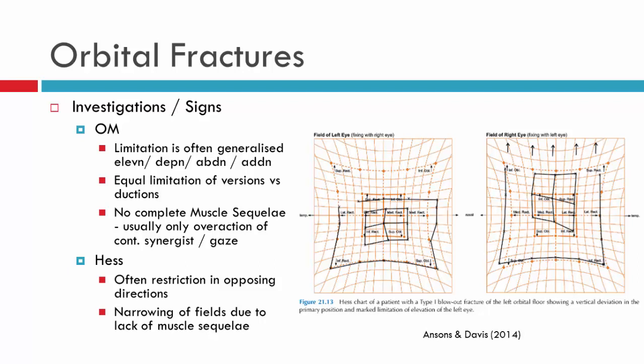As you know, versions will be equal to ductions, so with a blowout fracture, check your ductions — they should be equal should there be a mechanical restriction. You can actually end up with neurogenic palsies from orbital trauma, so keep this in mind as you investigate the patient. With mechanical restrictions there won't be a muscle sequelae, and any signs of overaction are usually related to the contralateral synergist.